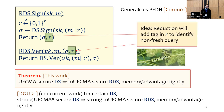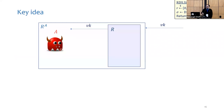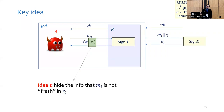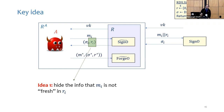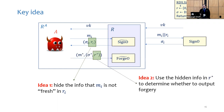Our main idea here is to use the randomness to hide a tag that will later help us identify whether a query is fresh or not. When the reduction receives a signing query, it will choose the randomness R_i in a way that hides whether or not the message is fresh. Later, when the reduction receives a forgery query, it will use the hidden information in the randomness to determine whether or not to output the forgery.